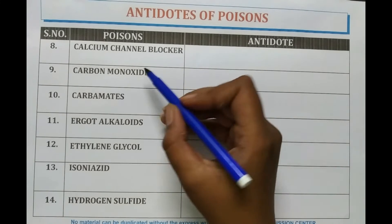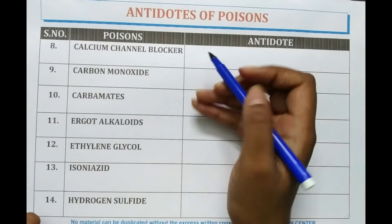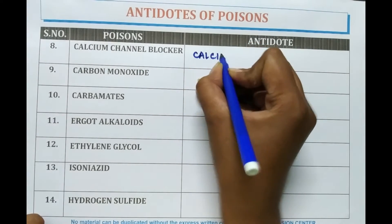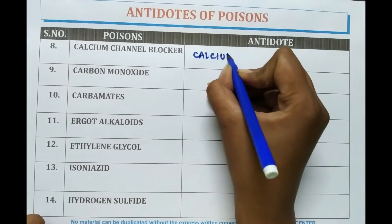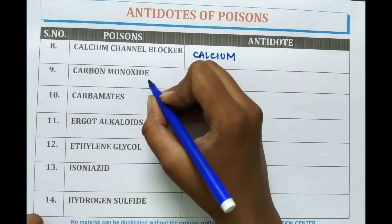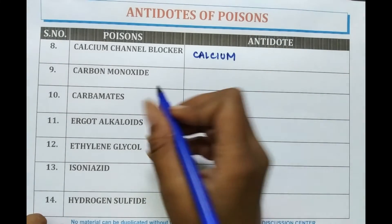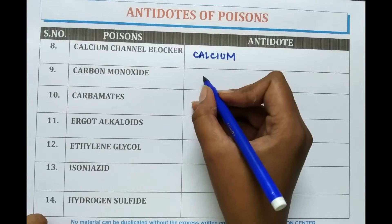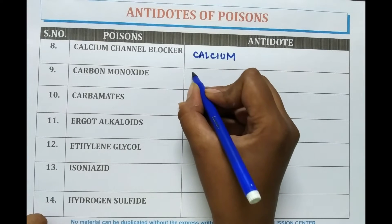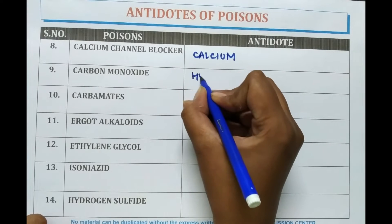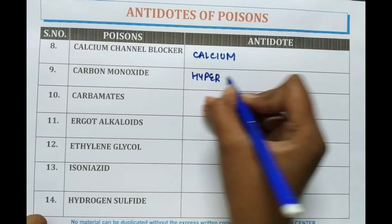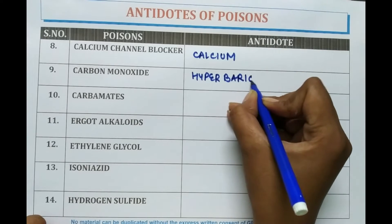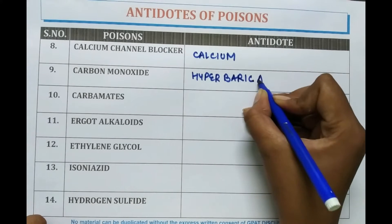In case of calcium channel blockers, calcium is given as an antidote. When carbon monoxide poisoning occurs, hyperbaric oxygen is given as the antidote.